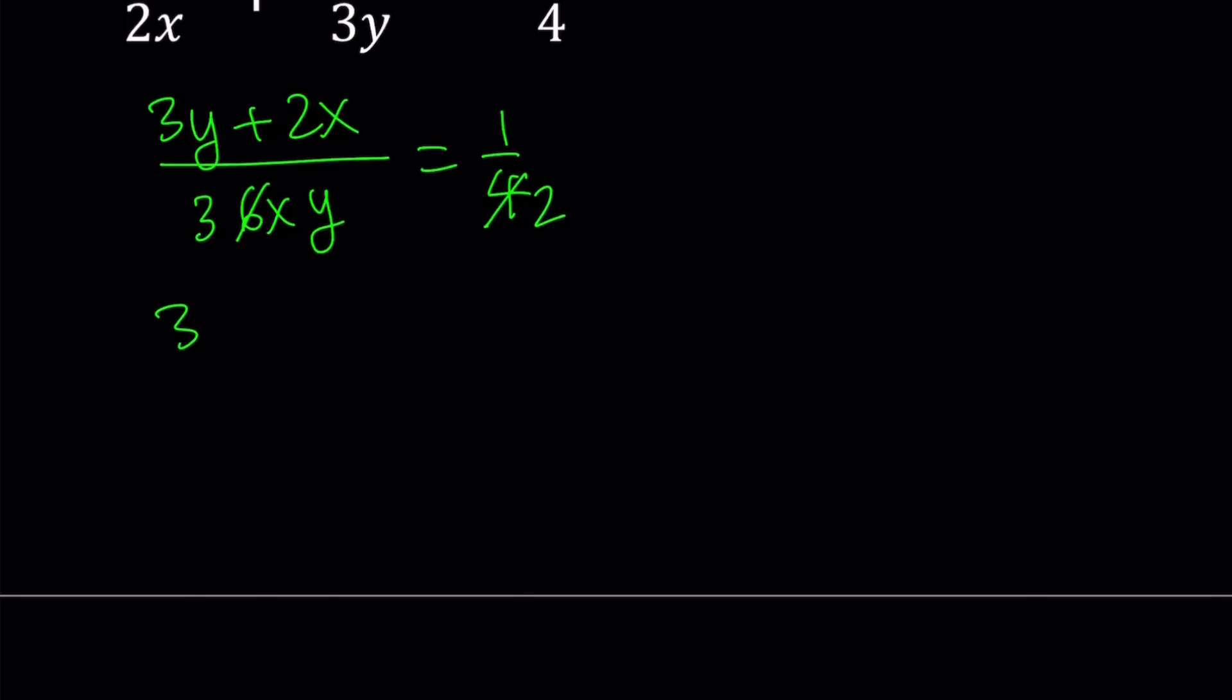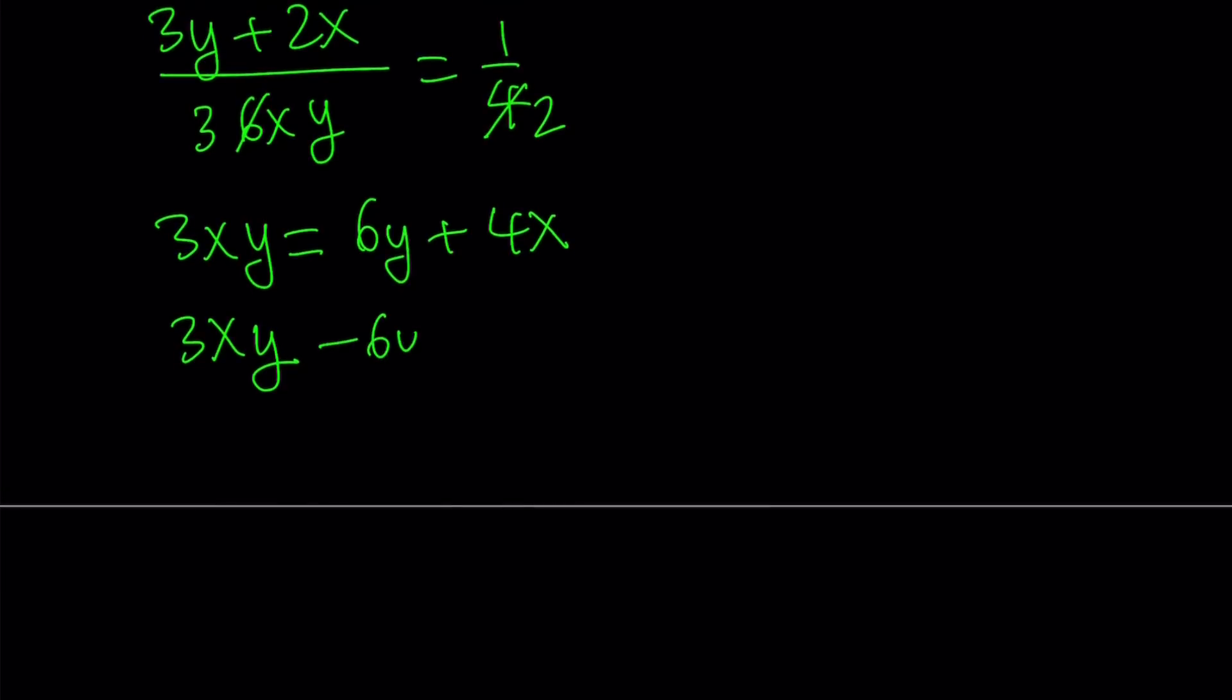I get 3xy equals, I'm going to multiply this expression by 2, so that's going to become 6y plus 4x. Now I'd like to write everything on the same side, so 3xy minus 6y minus 4x is equal to 0.